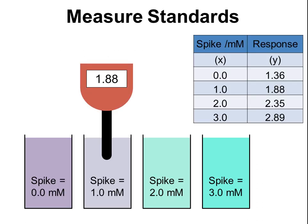Now that we've made all of these standard solutions, we can measure them for all of the different spike concentrations from 0 through to 3 mM. We get an instrumental response for each of those. We choose a suitable instrument that's going to respond to our analyte in a linear manner. The response of that instrument increases as the spike increases, because the concentration of analyte goes up throughout those standards. We get the readings shown in the table for this example.